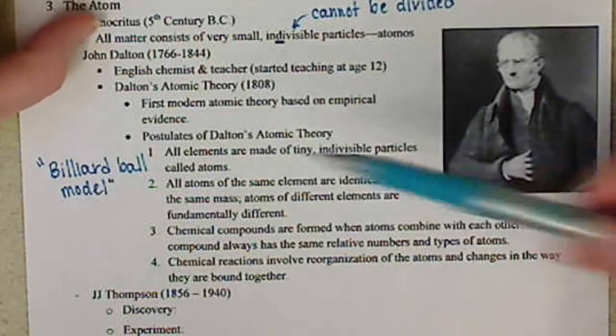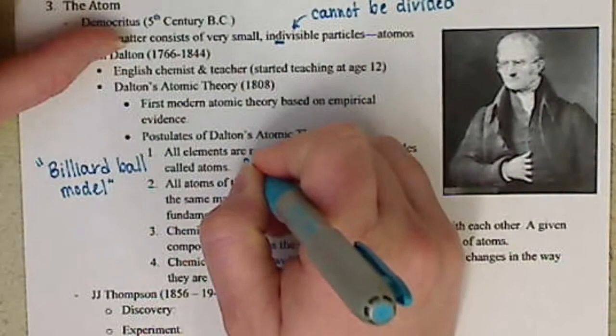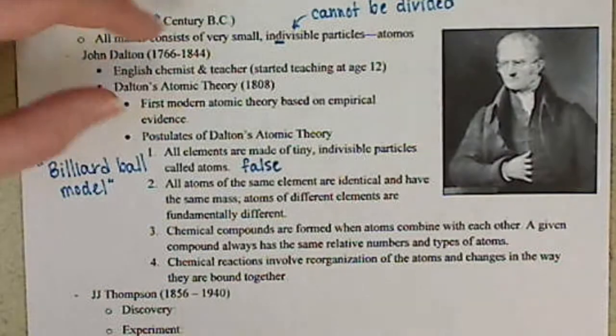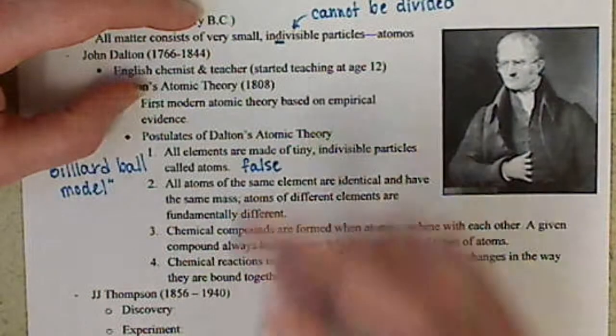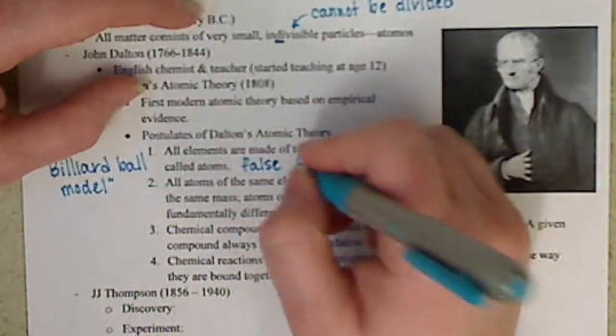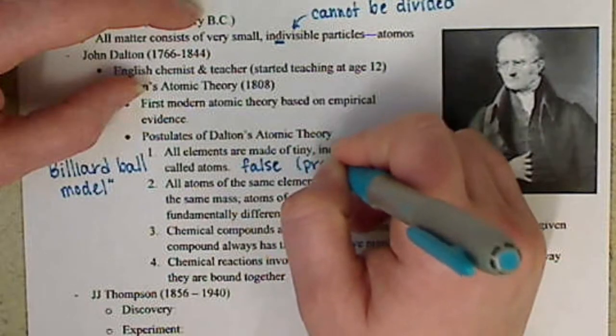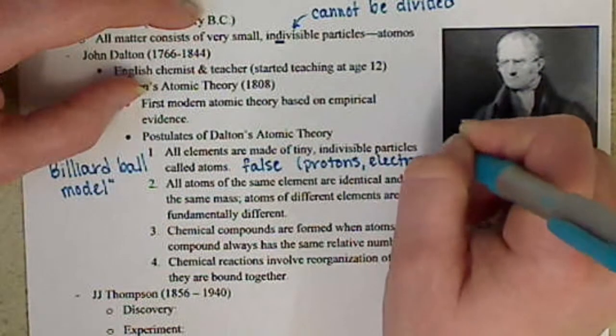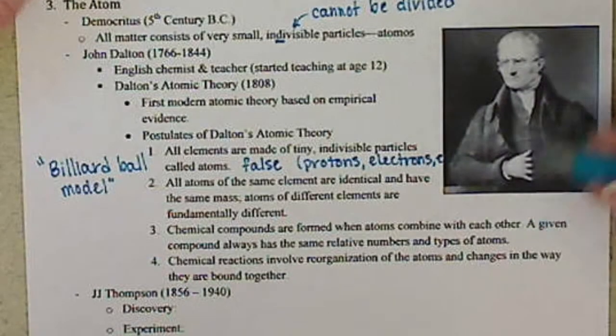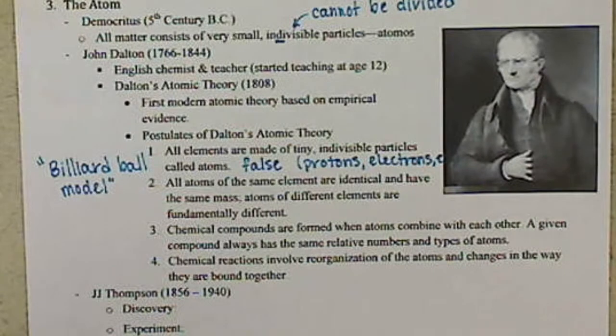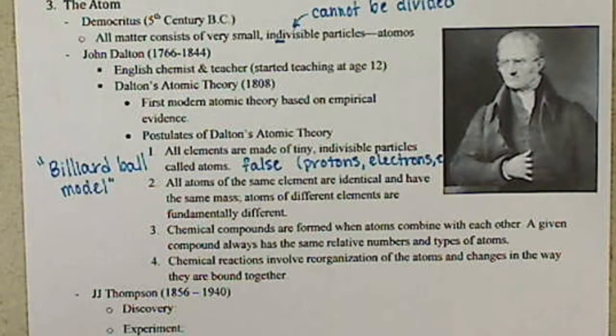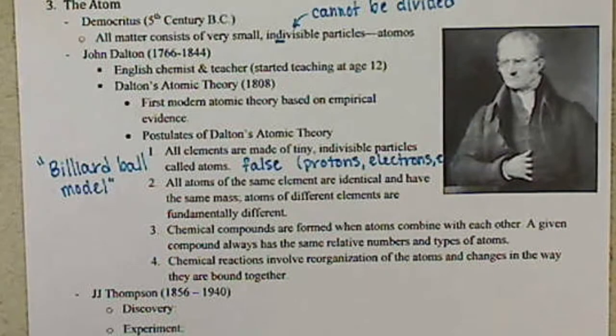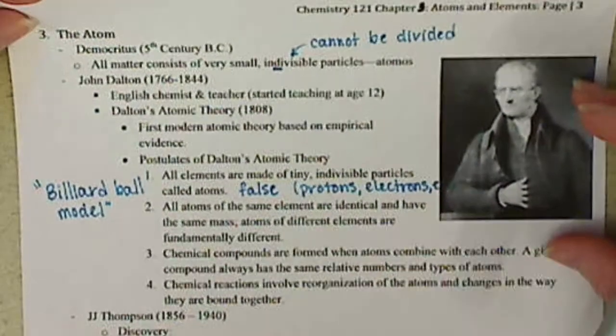So each of our atoms are like billiard balls, that's how they were thinking of that. Now, today we know that this actually ends up being false. We do have smaller particles than just atoms, and we'll get to those as we go through our history, but most of you probably know them. We have protons, we have electrons, and items like that, and we'll talk about those a little bit later.